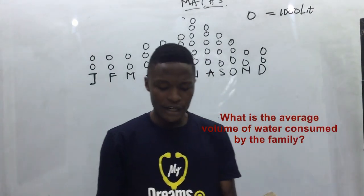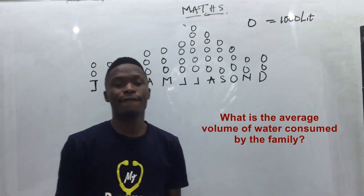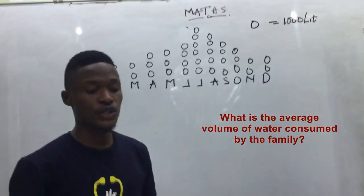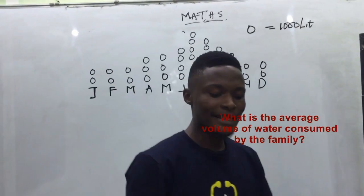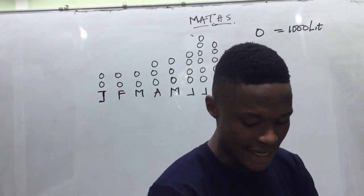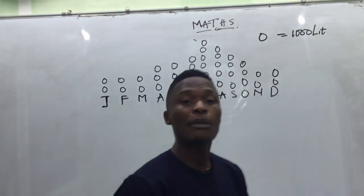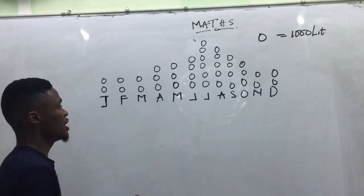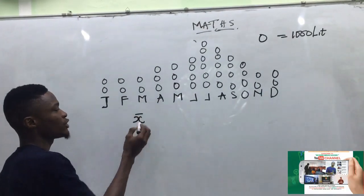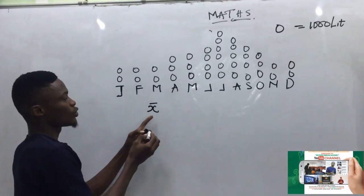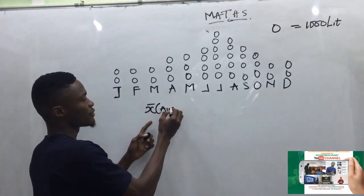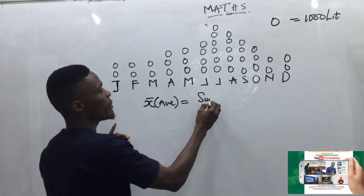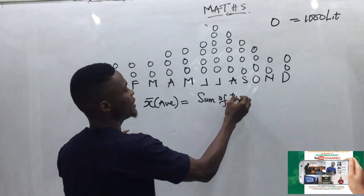Question one asks: what is the average volume of water used by the family? Anytime we want to calculate the average, there is a formula. Let me use x-bar to represent average. Average is given by the formula: the sum of the given data over the number of data.